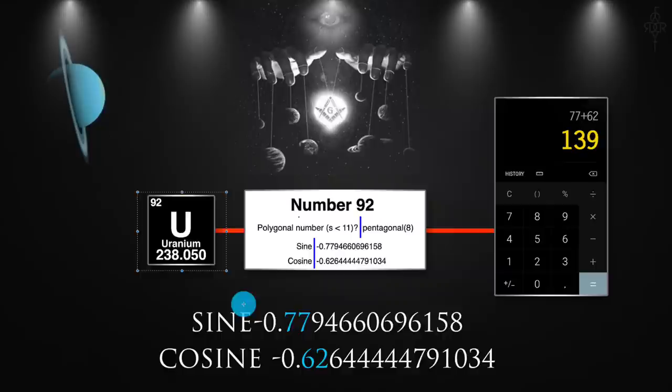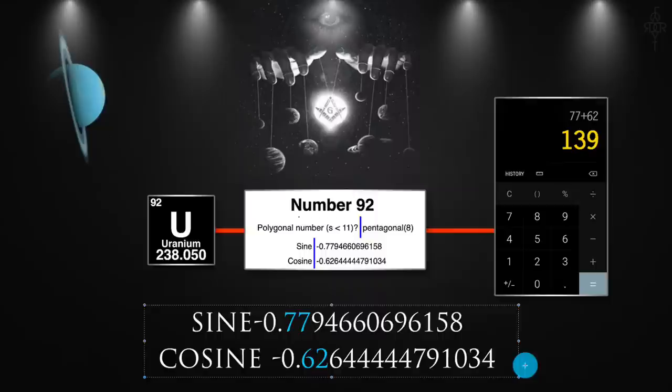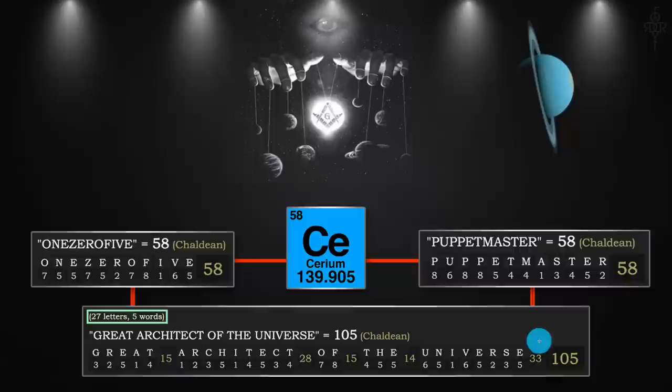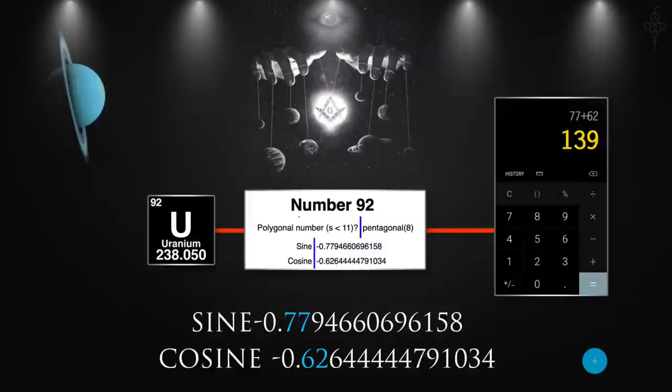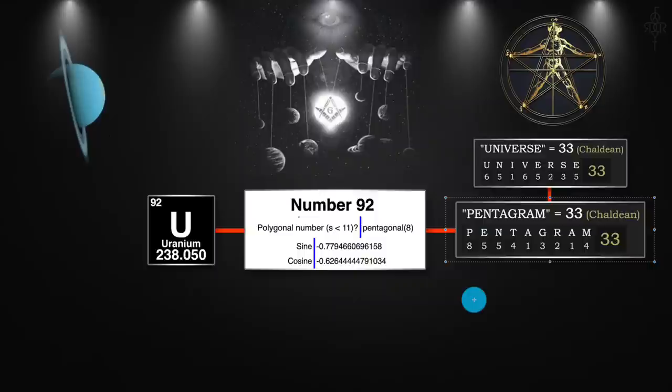Uranus — the U being the 21st letter tied to the World card. If you bring in some trigonometry, as I've shown, every number has a sine and cosine wave. For the number 92, the sine and cosine give us 77 and 62. When you add them up you get 139 — there's the connecting point. Remember, cerium is the goddess of agriculture, meaning the Earth. The 92 is the eighth pentagonal number, and that's what we're going to talk about. The pentagon makes up the pentagram — five-sided — and that makes up the universe. We're all co-creators of the universe.